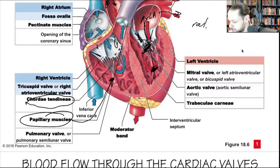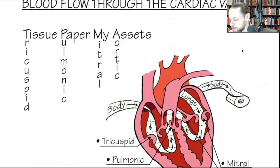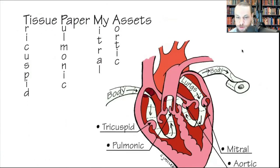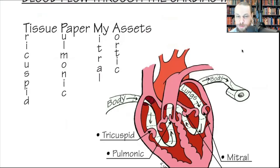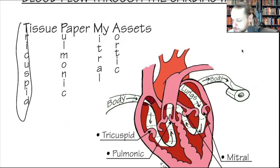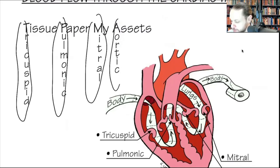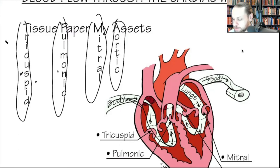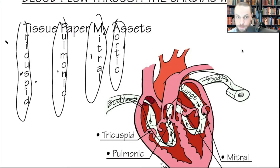To remember blood flow through the heart with all the valves, use the mnemonic 'tissue paper my acids' — Tricuspid, Pulmonic, Mitral, Aortic. Blood flows: right atria → tricuspid → right ventricle → pulmonic → lungs → left atria → mitral → left ventricle → aortic valve → aorta.